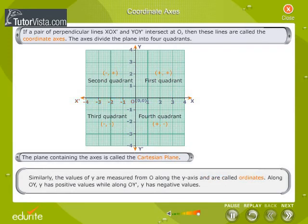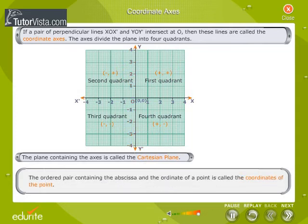Similarly, the values of y are measured from O along the y-axis and are called ordinates. Along OY, y has positive values, while along OY', y has negative values. The ordered pair containing the abscissa and ordinate of a point is called the coordinates of the point.